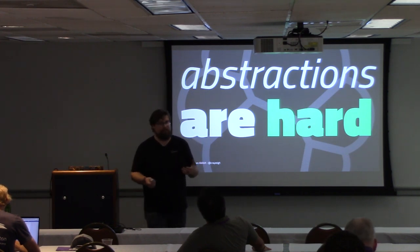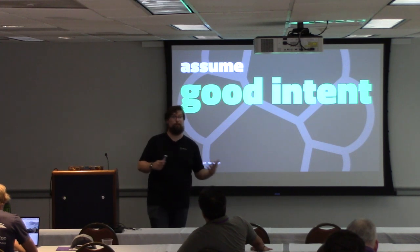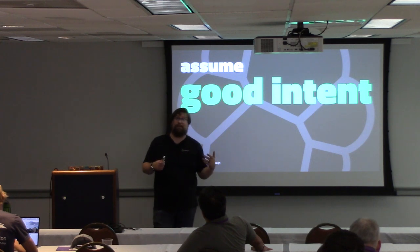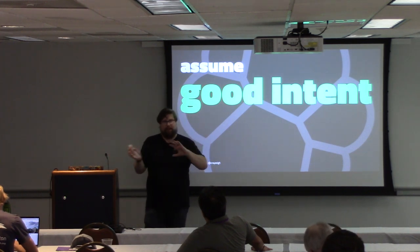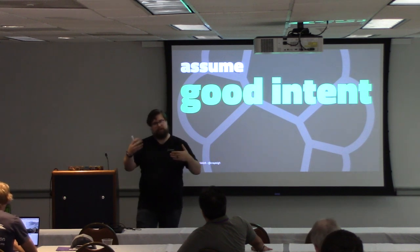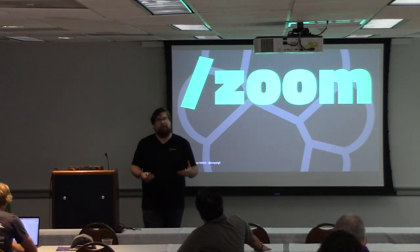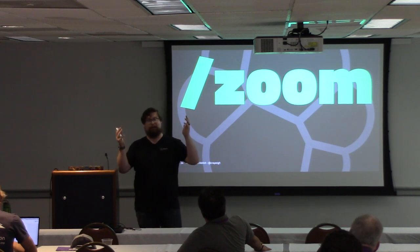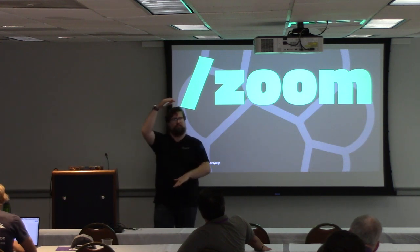One thing we always do is assume good intent. Usually when someone does something or says something that hurts or offends us, it's most of the time not intended. Starting from that frame of mind can really help you shift into a blameless mindset: this person probably meant to do something good, but something bad happened — how can we learn and improve? Sometimes abstractions aren't good enough, so we have a slash-Zoom command in Slack to instantly bring up a meeting room and go face-to-face. When I start typing a really long explanation, I recognize we probably need to talk directly to figure out where our disconnect is.